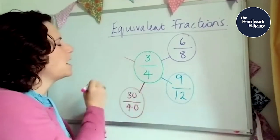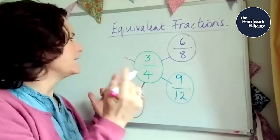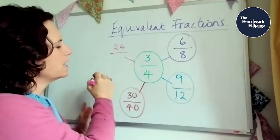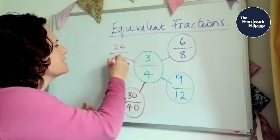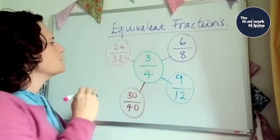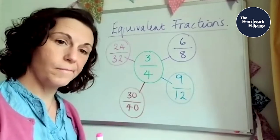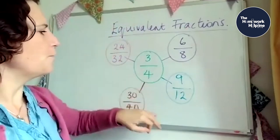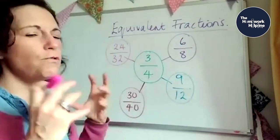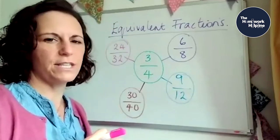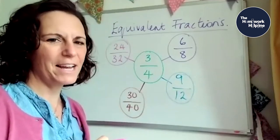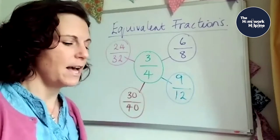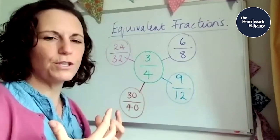So we can times them both by eight. Three times eight is 24. Four times eight is 32. 24 thirty-seconds. So you can carry on, you can make a nice web of numbers of fractions that are all exactly the same amount. They're just written in different ways. Okay, so that's quite a nice thing for you to do. And then you can maybe put it up somewhere nice or just have it in your book to refer back to.